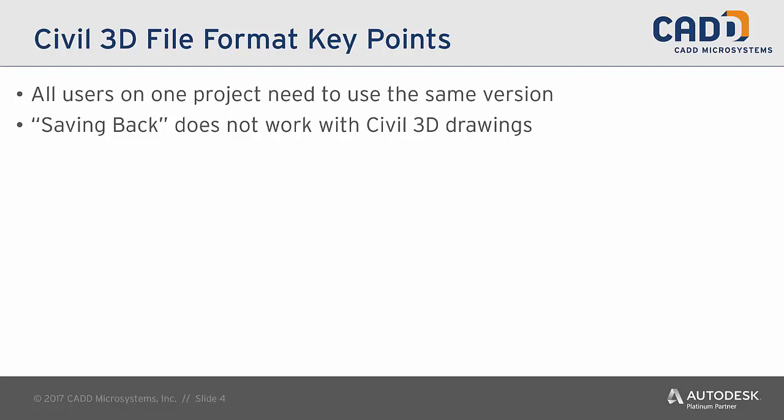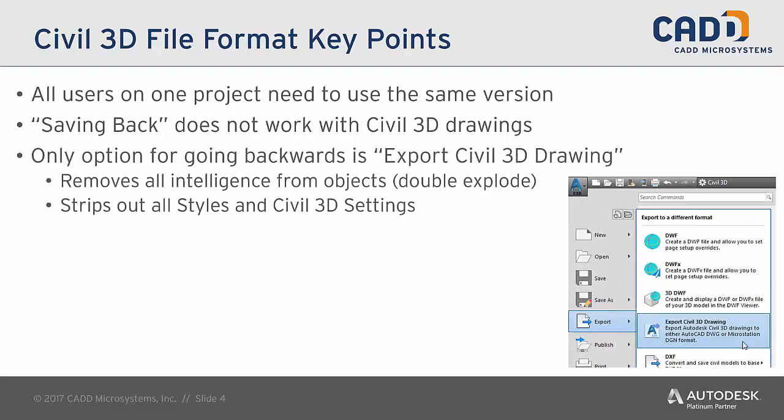There is no way to go backwards with a fully intelligent Civil 3D drawing. Your only option for going backwards is what's called an Export Civil 3D Drawing. This will strip it down and turn it into a basic AutoCAD drawing, removing all of the intelligence from the objects and stripping out all of the Civil 3D styles and settings. During that process, you do have the ability to choose a previous DWG version, even all the way back to R14. Remember: while you can absolutely save back with basic AutoCAD drawings, Civil 3D is a different story. The intelligent objects are the key. If you are working in a Civil 3D environment but only using AutoCAD tools, you can still do a save back. The issue comes when you start using and inserting the intelligent Civil 3D objects.